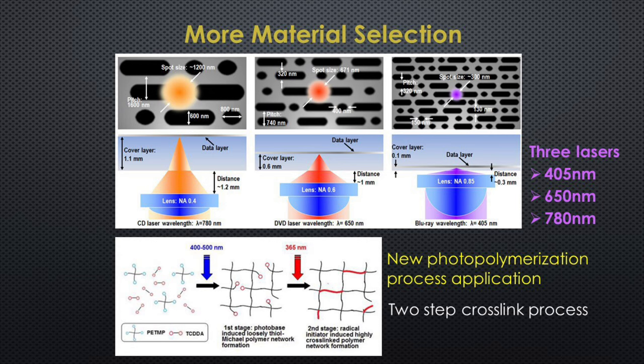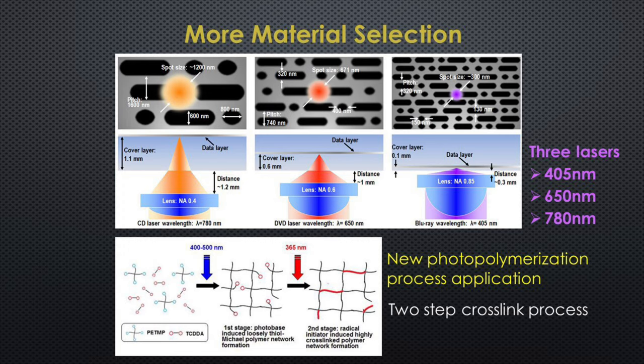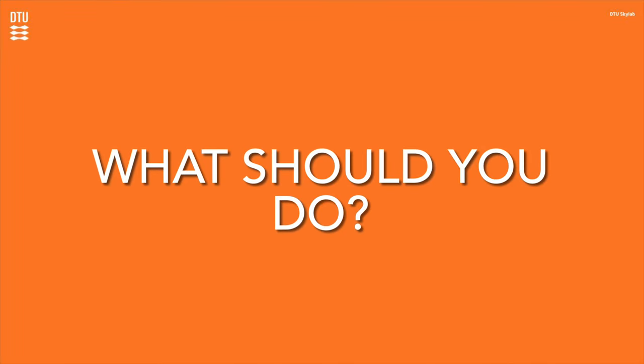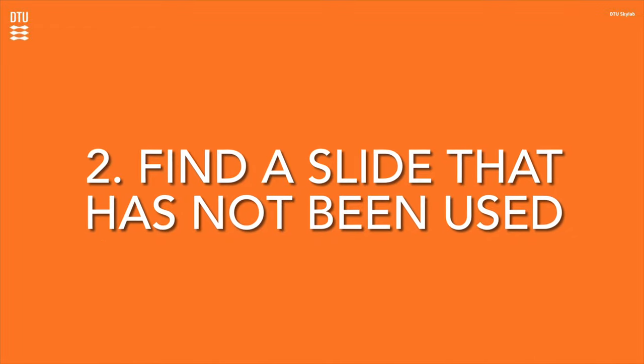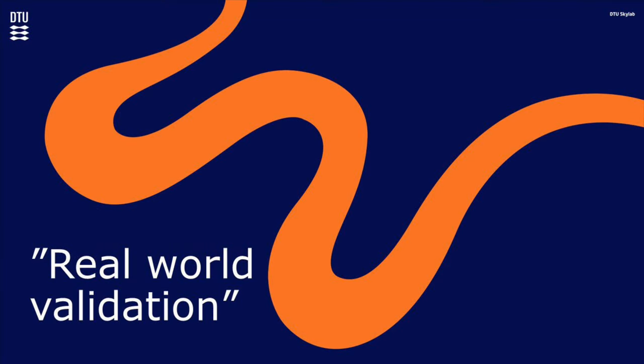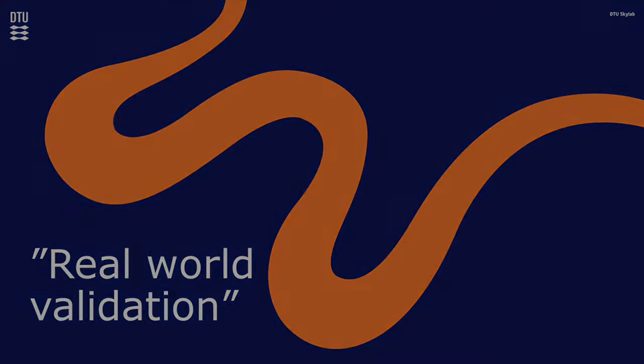Except for only a single wavelength laser, Add to 3D equips three types of lasers: at 405, 650, and 780 nanometer wavelengths, allowing for a broader range of material selection and a novel photopolymerization process.